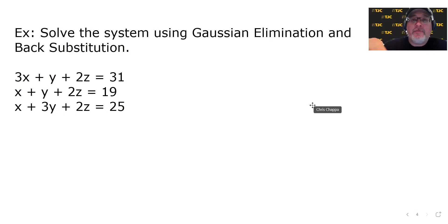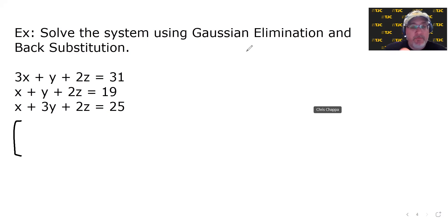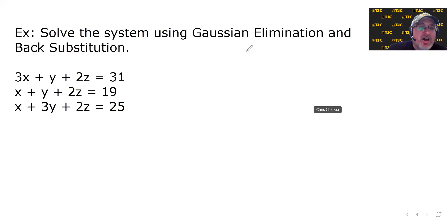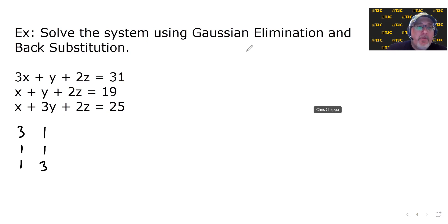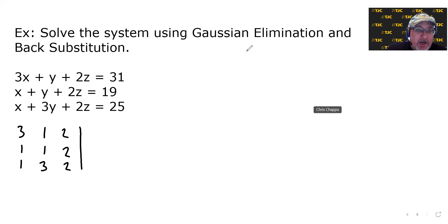Our first move is to write this as an augmented matrix. We just have to represent each variable's coefficients per column. The first column will be 3, 1, 1 for the x-coefficients. The next column will be 1, 1, 3 for the y-coefficients. The next column will be all twos because all of the z-coefficients are two, followed by our augmentation bar, and then our constants: 31, 19, and 25.